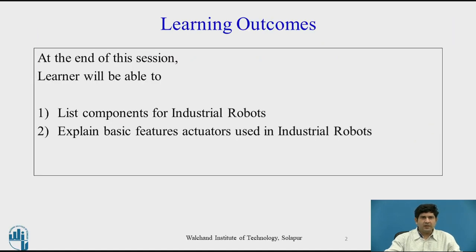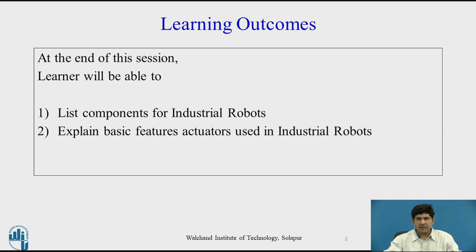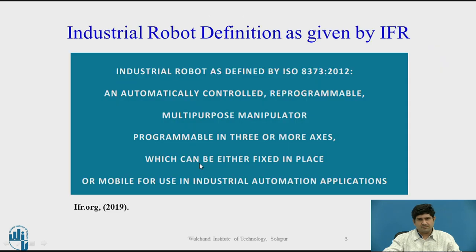The learning outcomes of this session will be that the student will be able to list components of industrial robots and explain basic features of the actuators used in industrial robots, which are basically hydraulic, pneumatic, and electric.